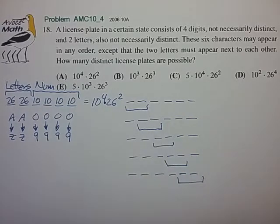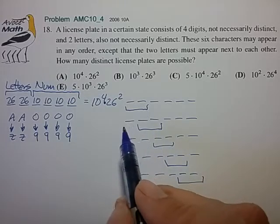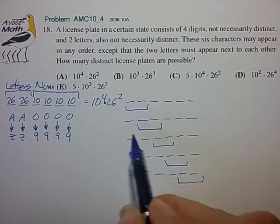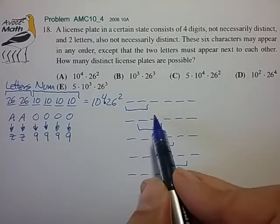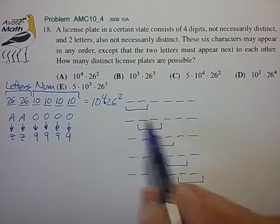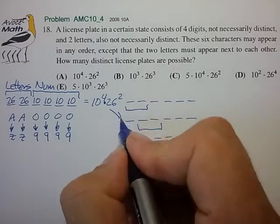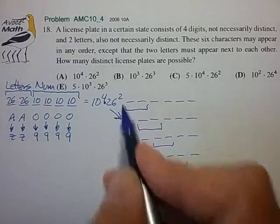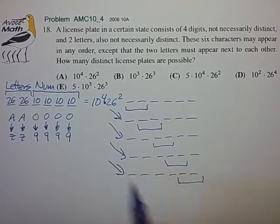If we examine these individual cases we realize that the mathematics for calculating the total number of possibilities is identical to this first case. We essentially have 26 times 26 possibilities for the letters, and 10 times 10 times 10 times 10 possibilities for the numbers. So the number of possibilities for each case is also 10 to the fourth times 26 squared.